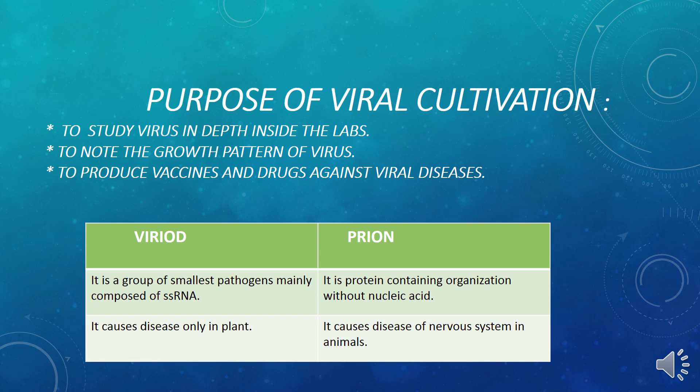There is an important differentiation from the virology section that is frequently asked in examinations — the difference between viroid and prion. Viroids are the smallest group of pathogens, consisting of single-stranded RNA, and they are rod-like structures. Whereas prions are protein-containing organisms that possess no nucleic acid — neither DNA nor RNA.